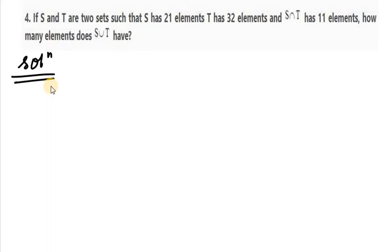Hello everyone, let's start with question number 4 of exercise 1.6. It says if S and T are two sets such that S has 21 elements, so let us write side by side, so we have n(S) as 21 elements. Now it says T has 32 elements, so n(T) is 32.